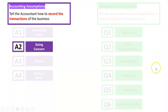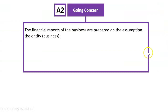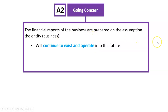What do we mean? We're looking at A2, accounting assumption number two. We're going to assume that the financial reports of the business are going to be prepared on the assumption that the business will continue to exist and operate in the future.